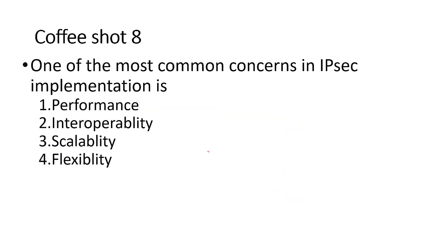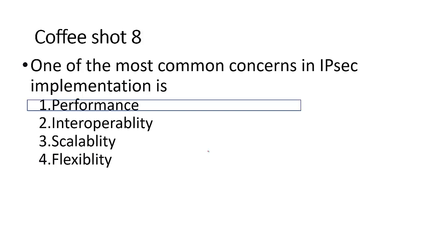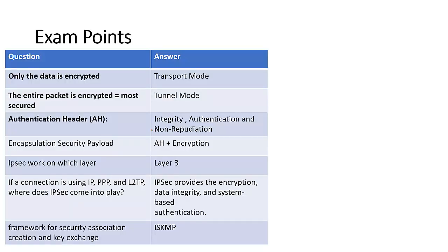What is one of the most common concerns in IPSec implementation? Flexibility is not a concern. Scalability is a concern. Interoperability is sometimes a concern. But the most important concern is performance because IPSec is a very processor-intensive activity. Encrypted data needs to be decrypted, the header read, then re-encrypted again. The performance cost includes encryption, integrity checking, and packet handling based on policies — all appearing as latency. That's why the answer is performance.